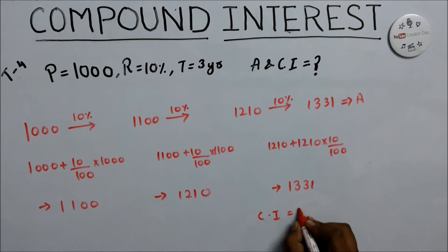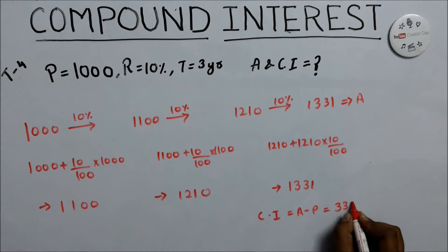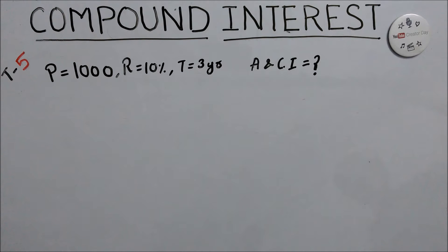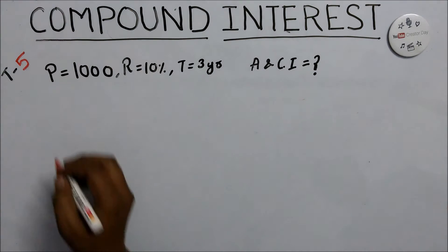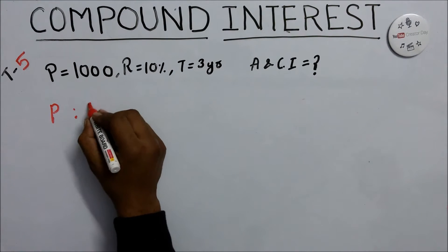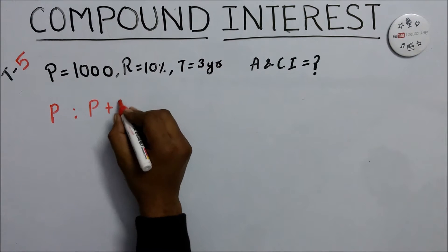Compound interest equals amount minus principal, which is 1331 minus 1000 equals 331. This is trick number five. The question is: principal equals 1000 rupees, R equals 10%, time equals 3 years. We need to calculate amount and compound interest. In this method we use the ratio between principal and equivalent rate of interest for three years.